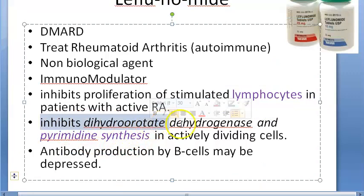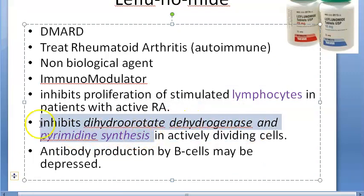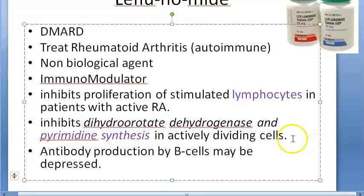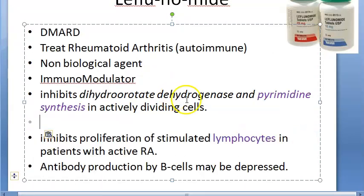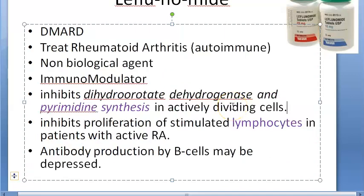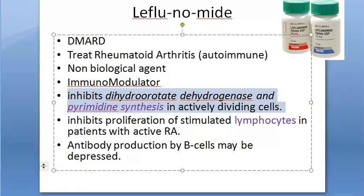How it works: it inhibits dihydroorotate dehydrogenase and pyrimidine synthesis. This is something to do with pyrimidine synthesis. Previously, drugs like methotrexate and azathioprine were purine synthesis inhibitors, whereas leflunomide acts on pyrimidines.